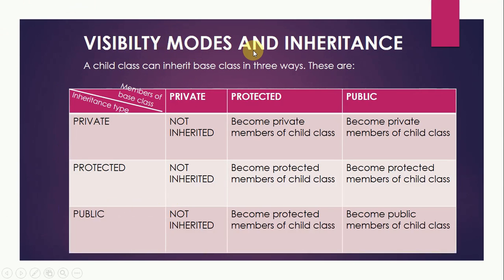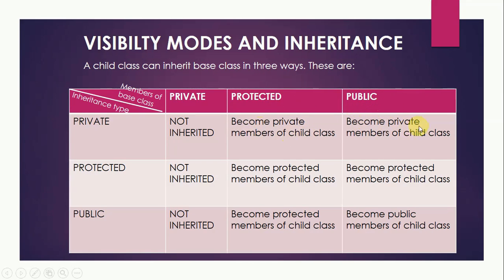Now let us understand the visibility modes and inheritance. A child class can inherit a base class in three ways: private, protected, and public. Members of the base class can also be private, protected, and public. If the inheritance type is private, the private members of the base class are not inherited at all. The protected members of the base class become the private members of the child class. In private inheritance, protected and public members of the base class become the private members of the child class.